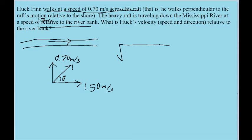We take the square root of both of these speeds squared and find their sum. So the square root of 0.70 meters per second squared plus 1.50 meters per second, and that's squared too. So we put this into our calculator...